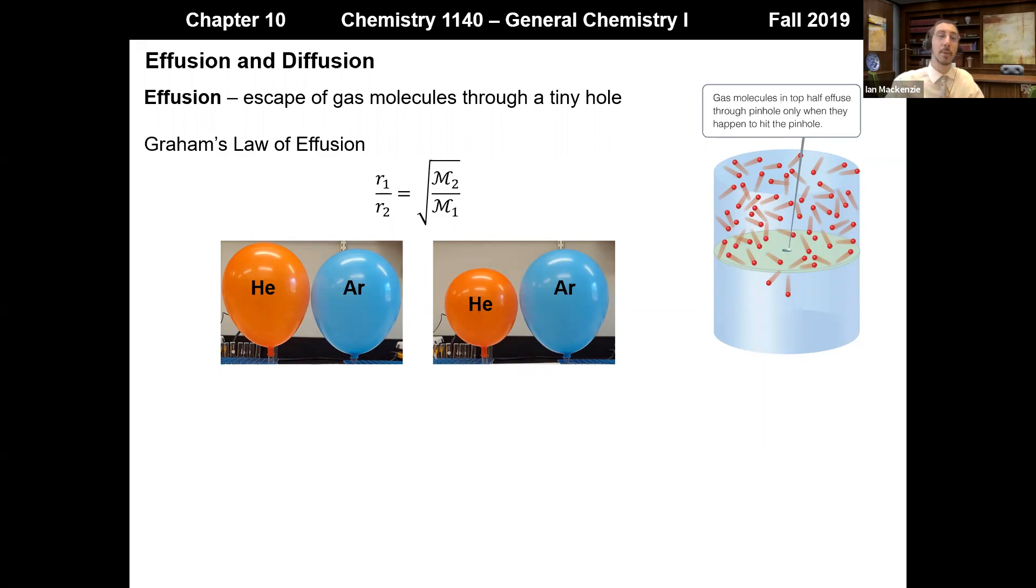And so that's because the rate of effusion for helium, because its molar mass is smaller than the molar mass for argon, then the rate of effusion is going to be larger for helium than it is for argon. And we can directly compare those two rates using this equation.